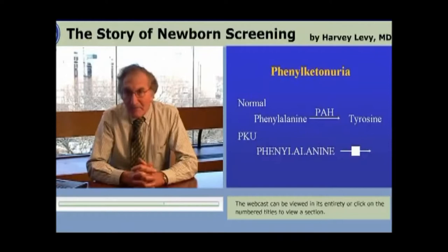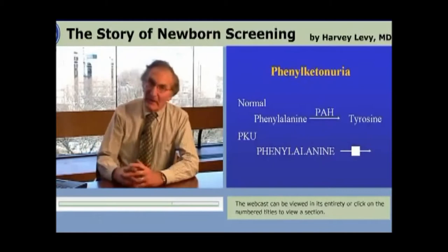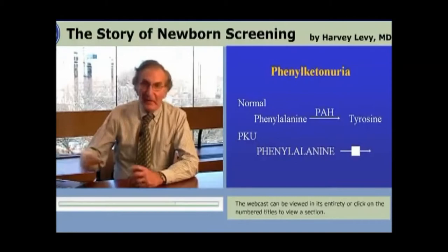In the normal situation, phenylalanine is converted to tyrosine under the influence of an enzyme, phenylalanine hydroxylase (PAH). In PKU this enzyme is defective, and therefore phenylalanine does not normally get converted to tyrosine, accumulates in large quantities, and produces the hyperphenylalaninemia of PKU.